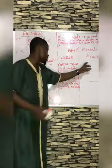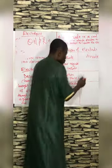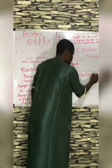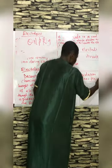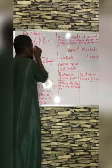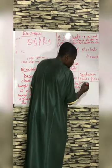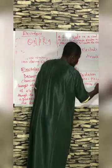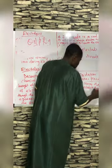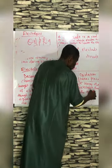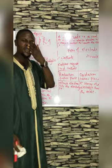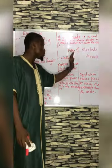Anions migrate to the anode. Oxidation takes place at the anode. Since oxidation is loss of electron, electron leaves the electrolyte through the anode. We have these two types of electrode: the cathode and the anode. It is expected for you to be able to differentiate them.